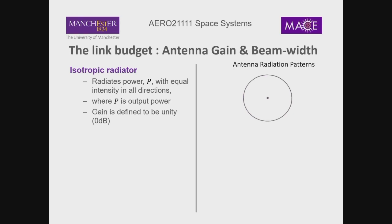We're looking at the mathematics used to analyse communication systems — using decibels. If we take the log of one, the log of base anything to one is zero. So that's zero decibels. If we have a gain of one, that means in decibels we have a gain of 0 dB — we're not adding any power, not focusing our beam, just transmitting equally in every direction.